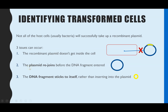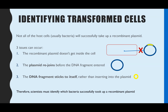The second issue is when you come to make your recombinant plasmid, sometimes the plasmid will rejoin and stick back together before the DNA fragment that you've isolated enters. And the final issue can be that the DNA fragment that you isolated might actually just stick to itself and create a really small loop, and again it doesn't make a recombinant plasmid. So we have to identify which bacteria have taken up the recombinant plasmid before we then grow the bacteria en masse.